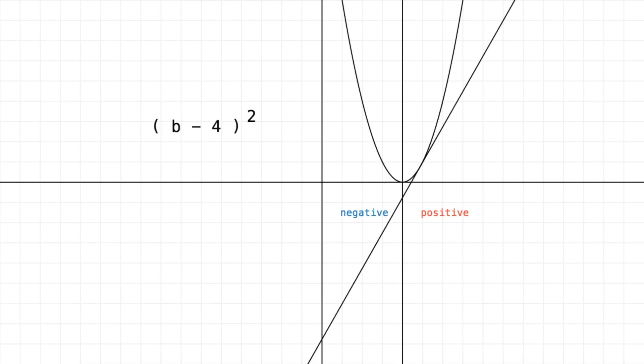So what update should we do to b to get us right down here into the target value? Well we can subtract the slope of the cost function at b.